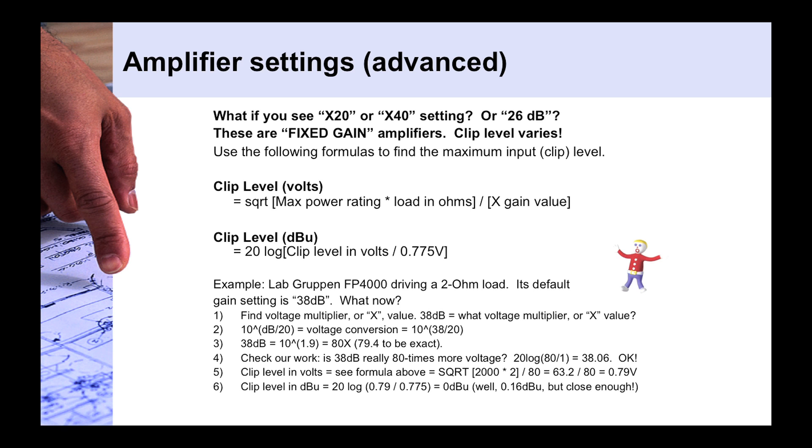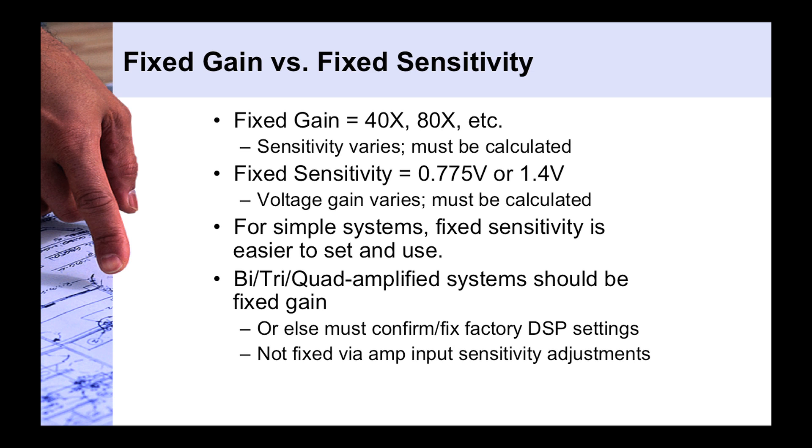So, just be very mindful of when you run into these fixed gain amplifiers in a lot of these bi- and tri-amplifying situations, that you do the math so that you can do your gain structure settings properly. Again, just a quick rundown. Fixed gain, you'll see something that will say 40x, 80x, or just give you a voltage multiplier value. So, you might see a dB setting, and with a fixed sensitivity amplifier, it will simply give you the voltage at which the amplifier will clip. So, 0.775 volts, or 1.4 volts, or it may give you, say, 2 volts. Whatever that level is, that's going to be your clip level that you convert to a dBu, and that will give you what you need to adjust your gain structure.